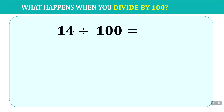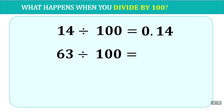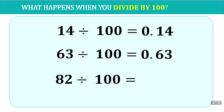Let's look at some bigger numbers. 14 divided by 100: place a zero there and move the decimal place once, twice — our answer is 0.14. 63 divided by 100: put a zero to hold the place, move once, twice — our answer is 0.63. 82 divided by 100: by now you can see that all we have to do is move the decimal point twice, and that is our answer 0.82.